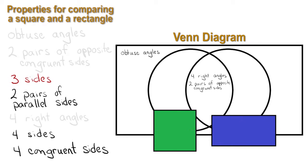What about the property three sides? We can see that these shapes do not have three sides. So this property will be written under obtuse angles, and we can check it off our list.